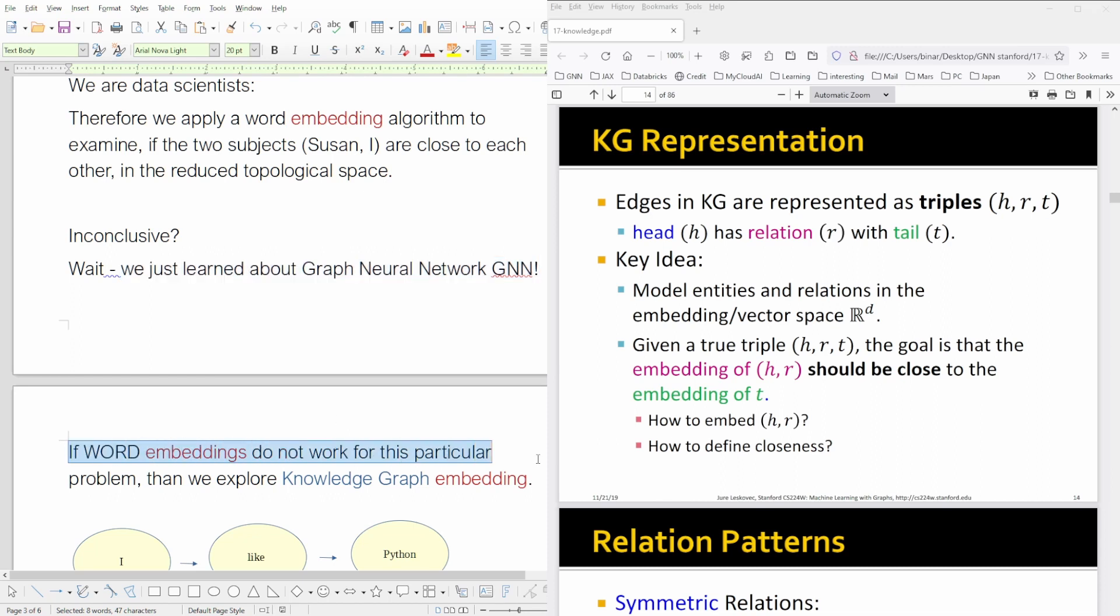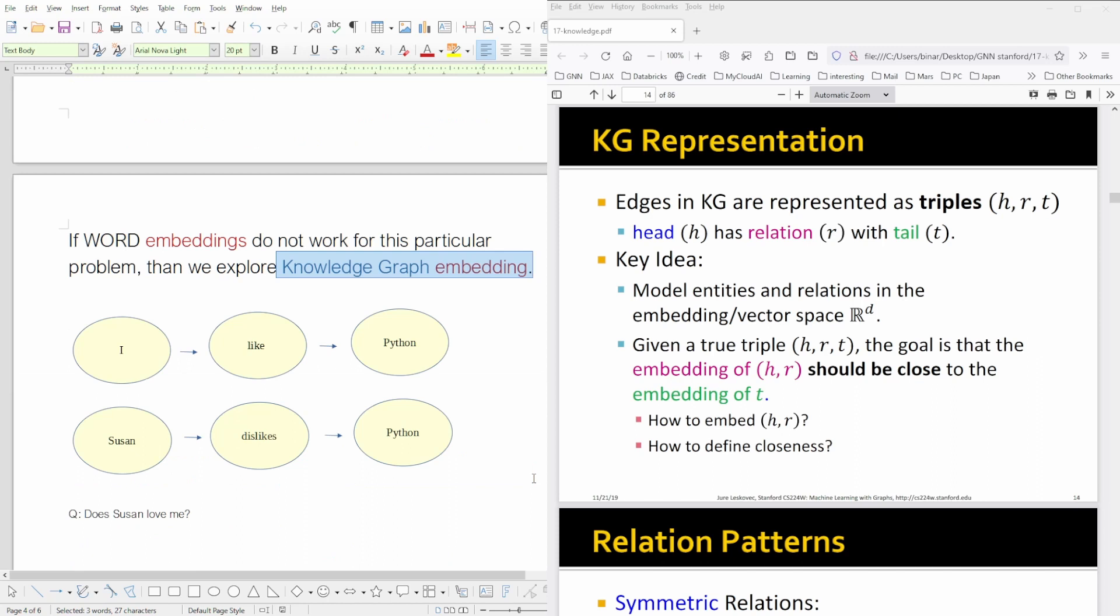If word embeddings do not work for this particular problem, we explore another kind of embedding—and not just a graph embedding where we add up the vectors of all the nodes in a sentence. No, we now have the third highest level we can imagine: knowledge graph embedding. I have two sentences 'I like Python'—now it is easy to say each word should be a node, and if we have a linear sequence like words in a sentence, then I have here my node 'I', my edge, 'like' is another node, 'Python' is another node, and then 'Susan dislikes Python.' So we have six nodes and it's a linear structure.